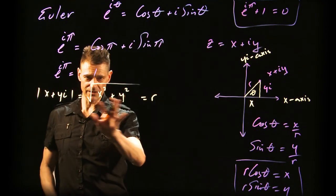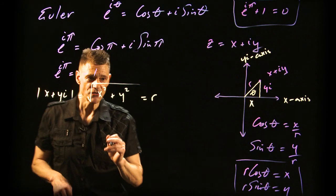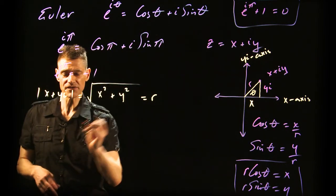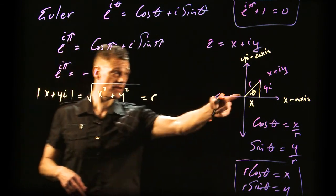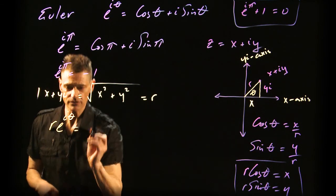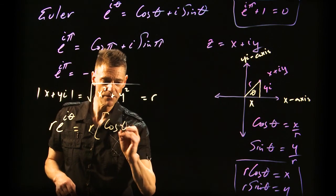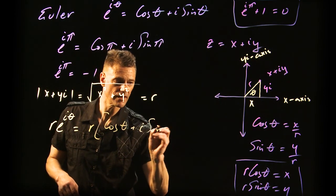If this is bugging you, don't worry. We'll talk more about this. For this angle θ, what is r·e^(iθ) actually equal? Well, it's going to be r(cos(θ) + i·sin(θ)).